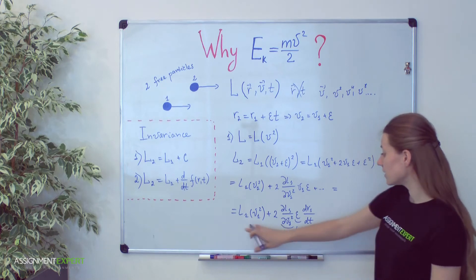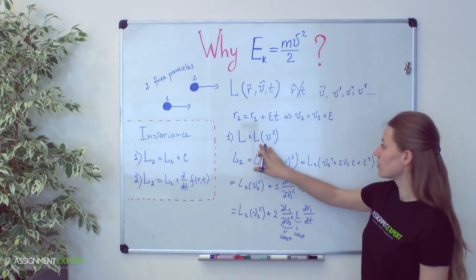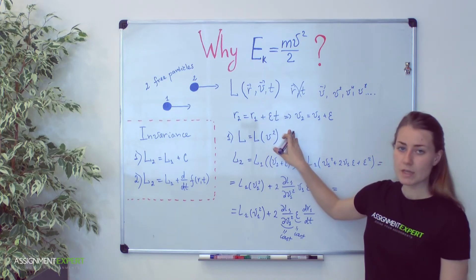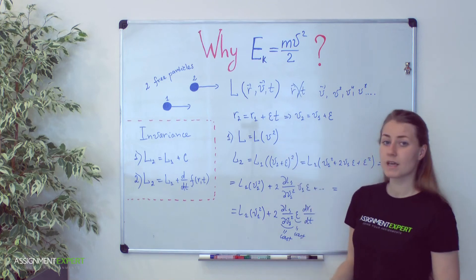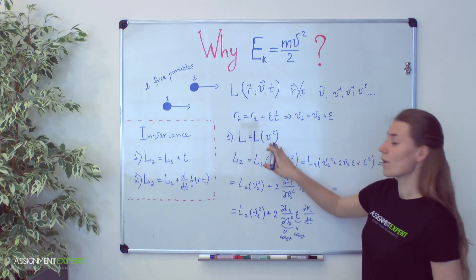It means that in this case such Lagrange function will generate similar equations of motion after Galilean transformation. It means that Galilean principle in this case is satisfied. And such power of velocity works for physics.